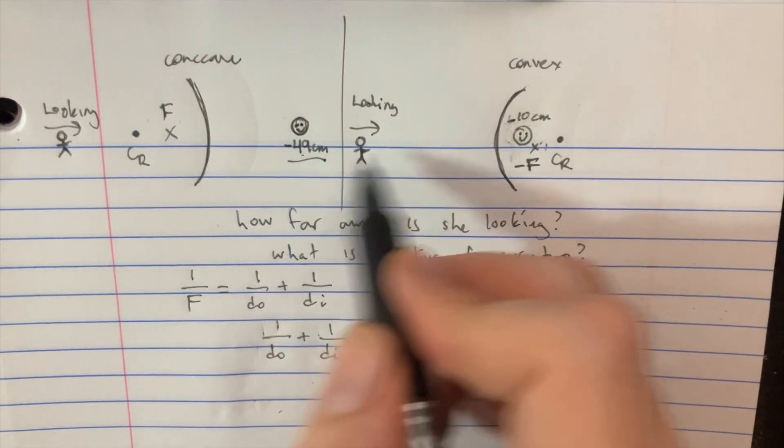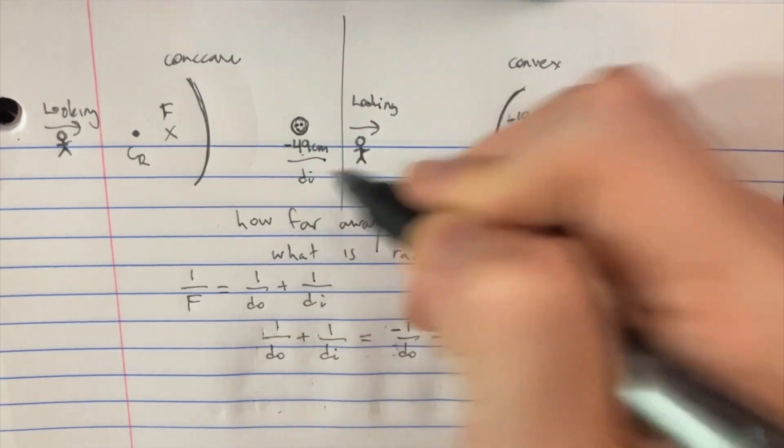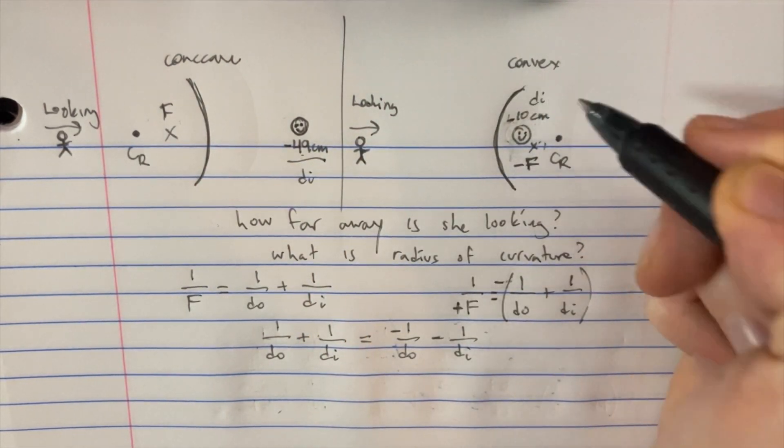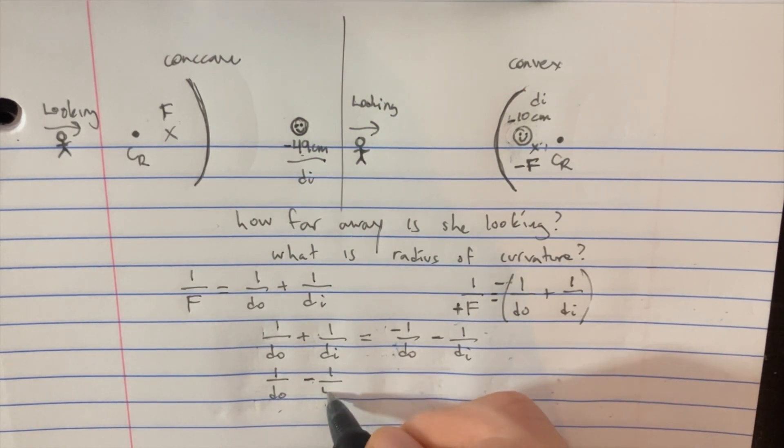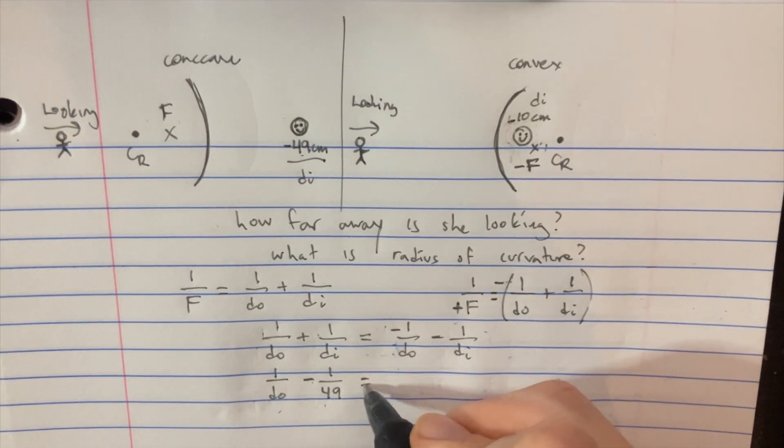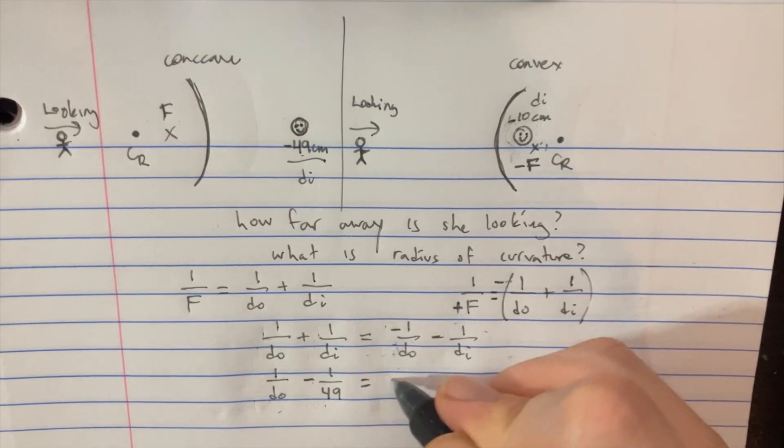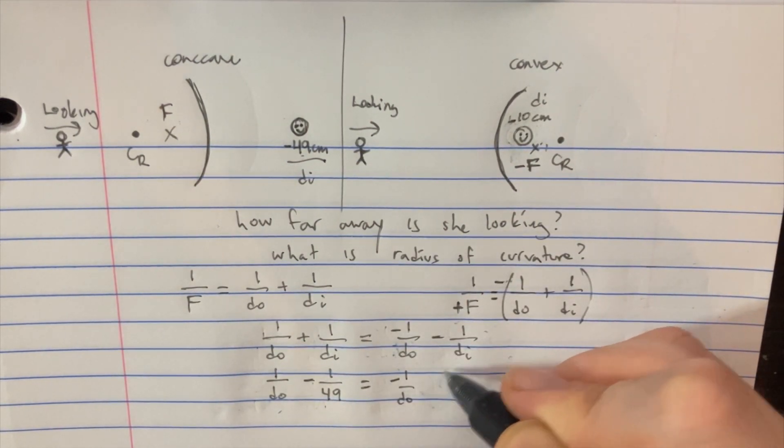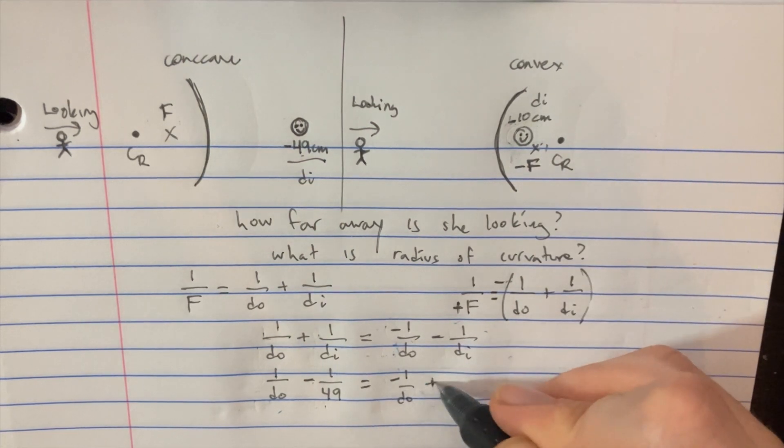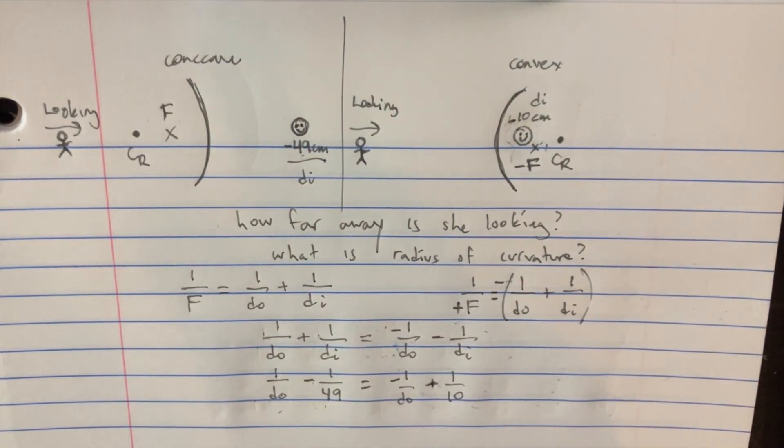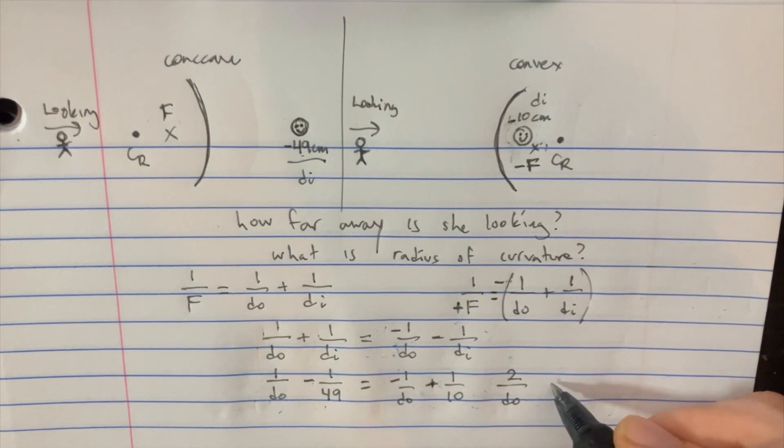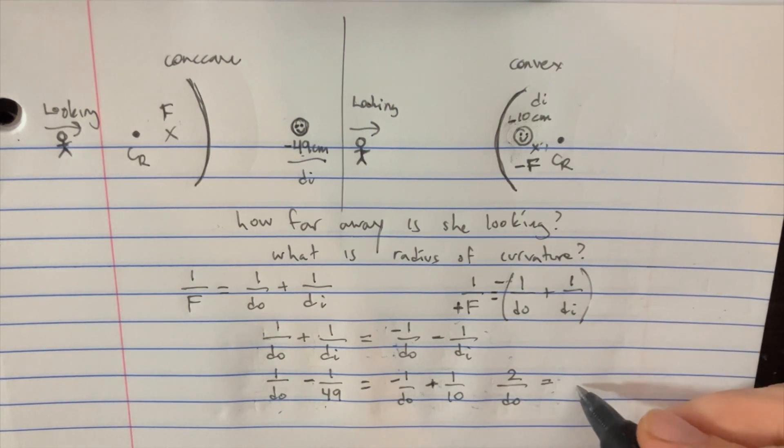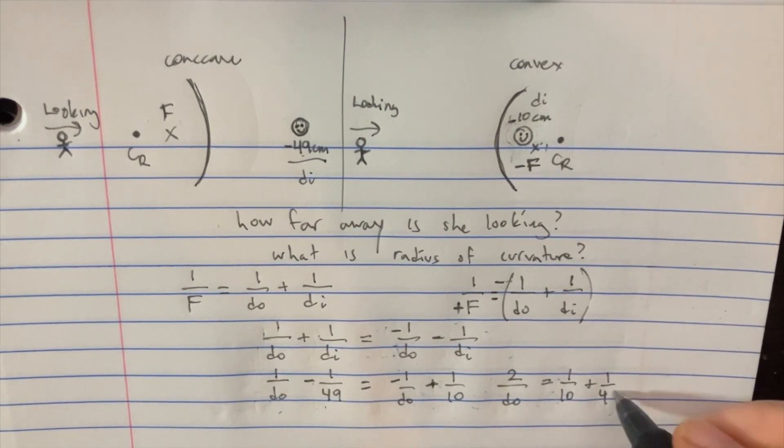So now we could try to plug in the actual numbers for these D images, these DI's. So let's go ahead and do that. 1 over D of the object, and then this is going to be minus 1 over 49 on that side. It's going to be equal to 1 over D not there. And then here we're going to subtract negative 10, so we're really just adding a tenth there. And then we can rearrange this by putting these over here and then we'll get 2 over D of the object is equal to 1 over 10 plus 1 over 49.